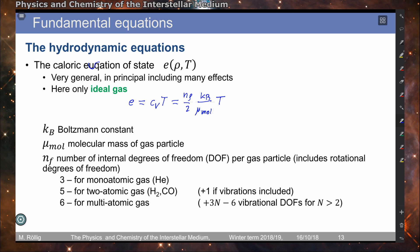The internal degrees of freedom depend on the type of gas. For a monatomic gas — a single particle — we have three degrees of freedom for translation: we can move in three different spatial directions. For a diatomic gas such as molecular hydrogen or carbon monoxide, we again have these three degrees of freedom for translation, plus two additional degrees of freedom that describe rotation.